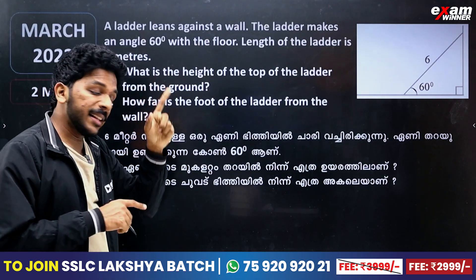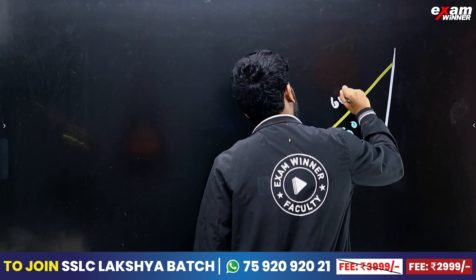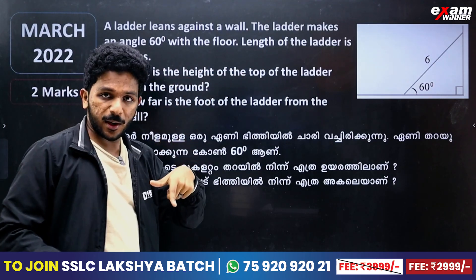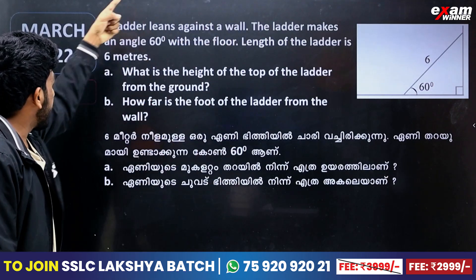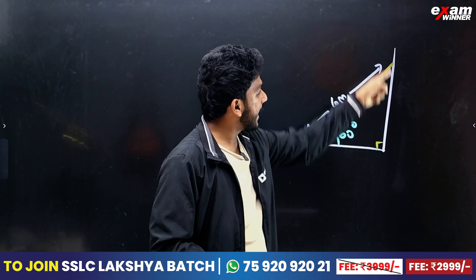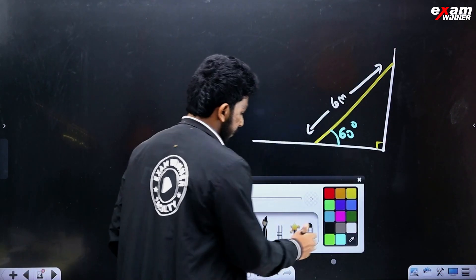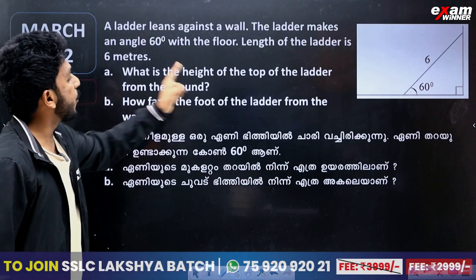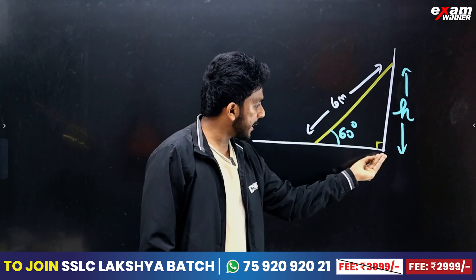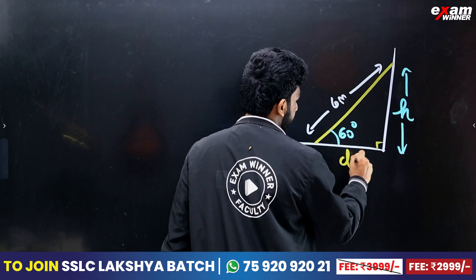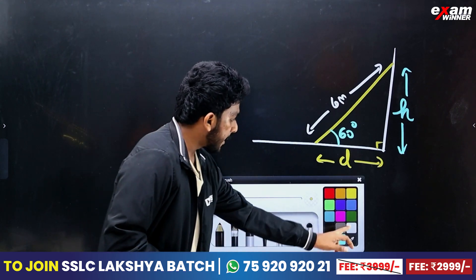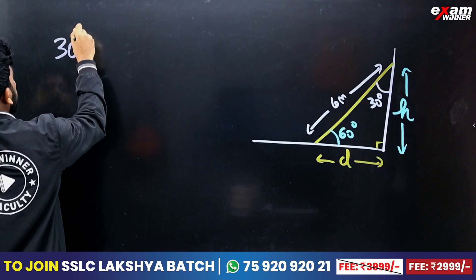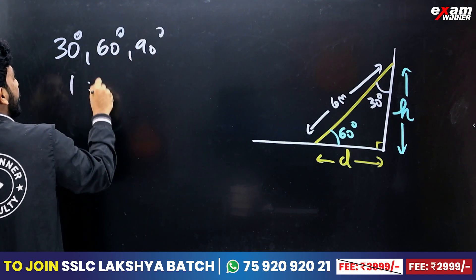The length of the ladder is about 6 meters. So this is 6 meters. What is the height of the top of the ladder from the ground? I call this height. First, how far is the foot of the ladder from the wall? I call it D. This is the 30-60-90 triangle. The ratio of 30-60-90 is 1 : √3 : 2.